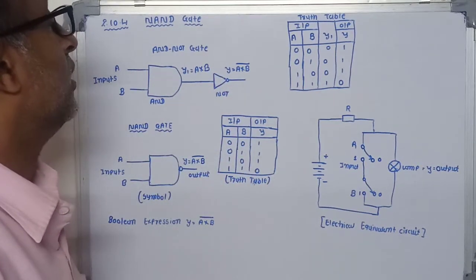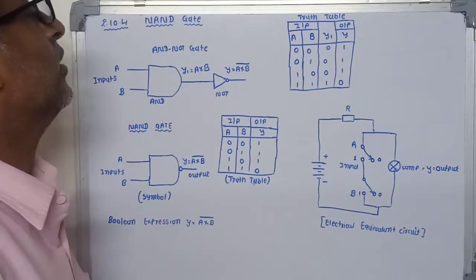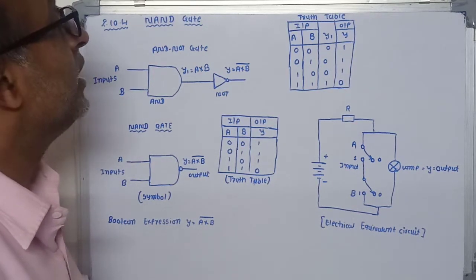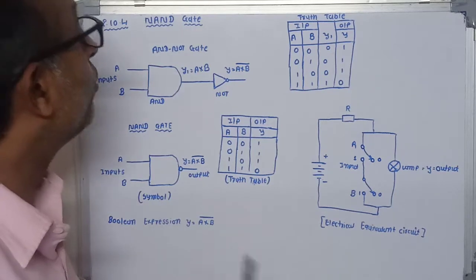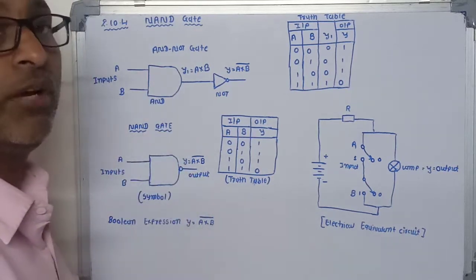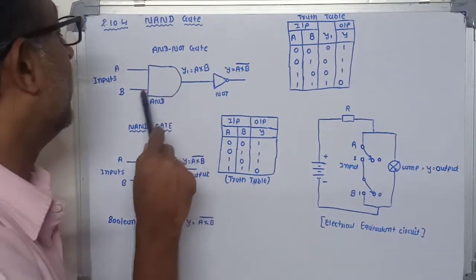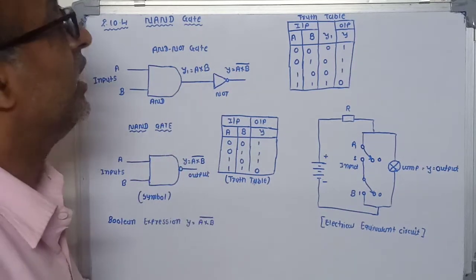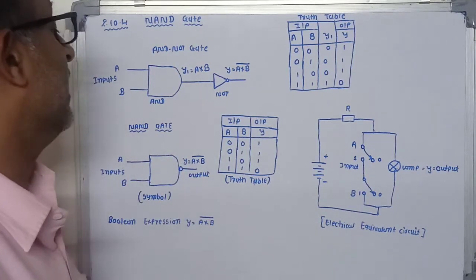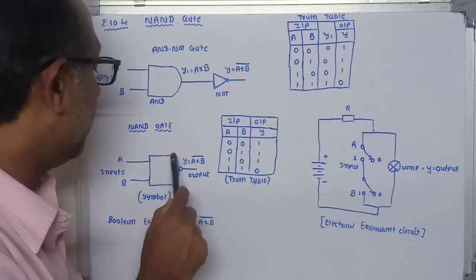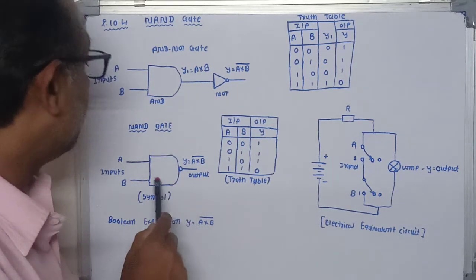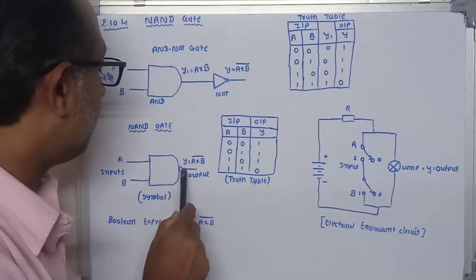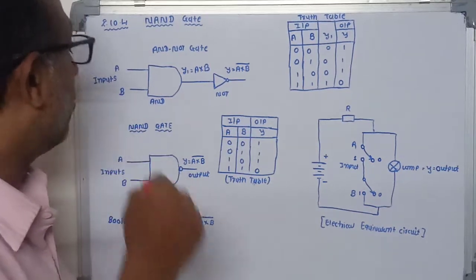So from that we conclude that the output of the NAND gate is the inverted output of the AND gate. Whatever output we get from the AND gate is inverted by the NOT gate to get the output of the NAND gate. Here this is the symbol for the NAND gate — this bubble indicates the inversion.